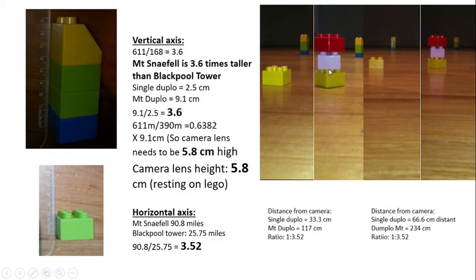What I'm showing here is that in both of these photos, as I predicted, you need three Blackpool Towers in order to get to slightly taller than Mount Snaefell.